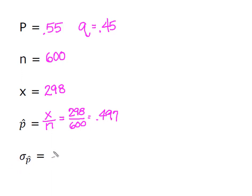Last but not least, we're going to calculate the standard error of the proportion. We know that that's found by taking the square root of P times Q divided by N.